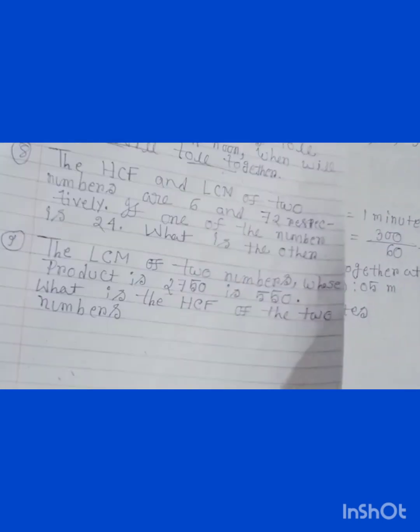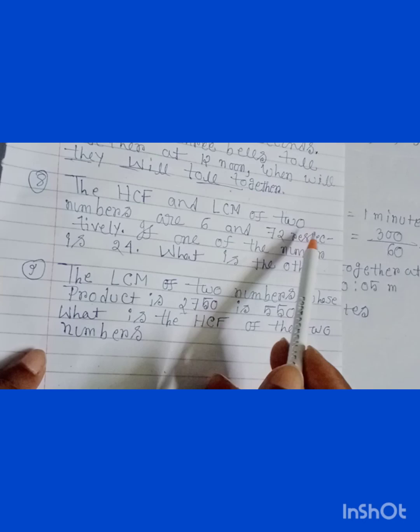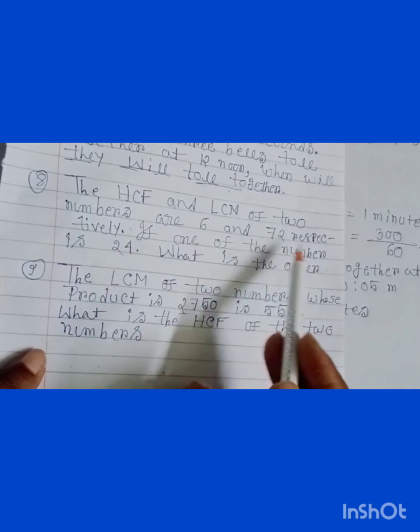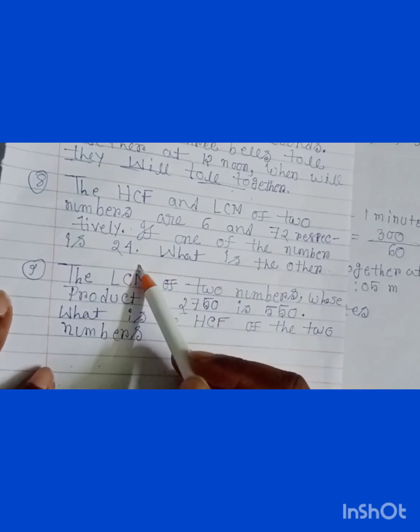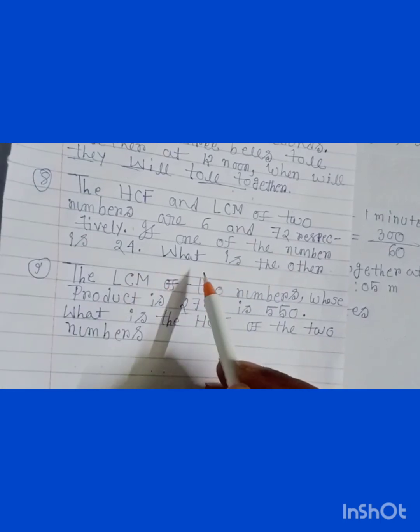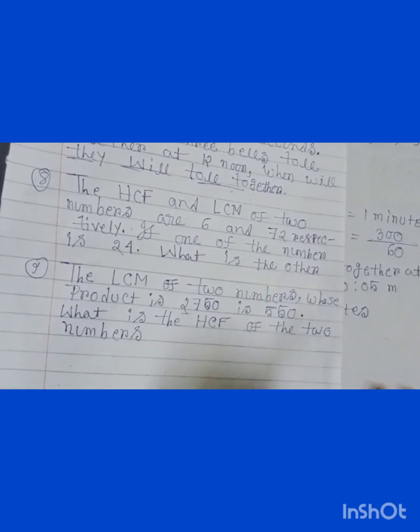Okay students, our next problem is: the HCF and LCM of two numbers are 6 and 72 respectively. If one of the numbers is 24, what is the other? Let's find the answer.